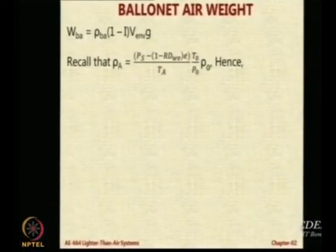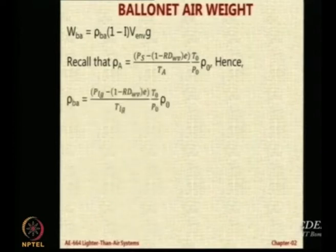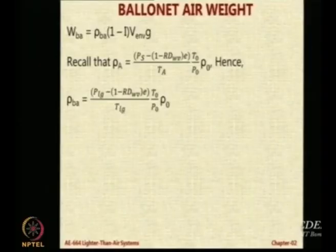This term in the numerator in brackets is essentially the pressure which is going to be less by the magnitude (1-Rd) times e because of the humidity. Because of the density, sorry because of the relative density, I am sorry not humidity, this is because of the density. The density of LTA gas is lower than that of the air. Now, the density of the air in the ballonet, that will be rho_BA.